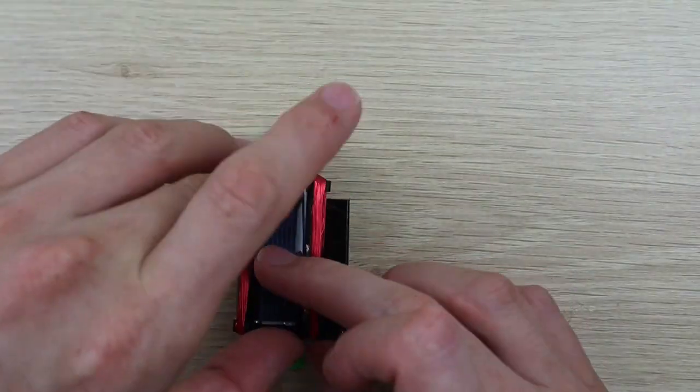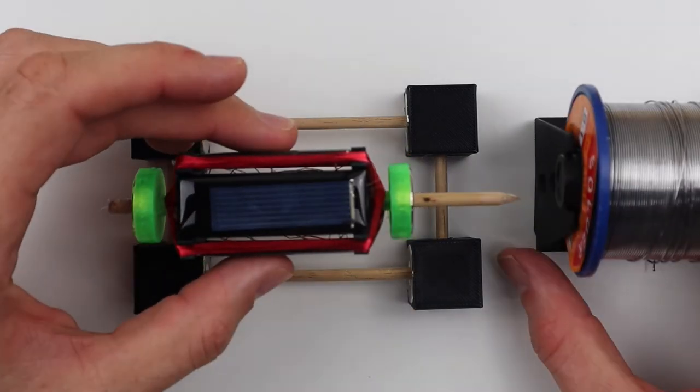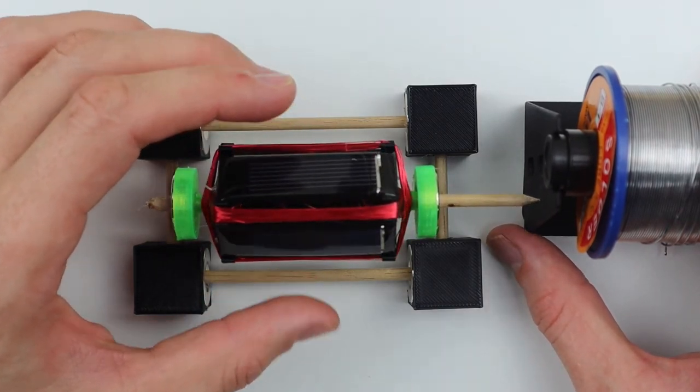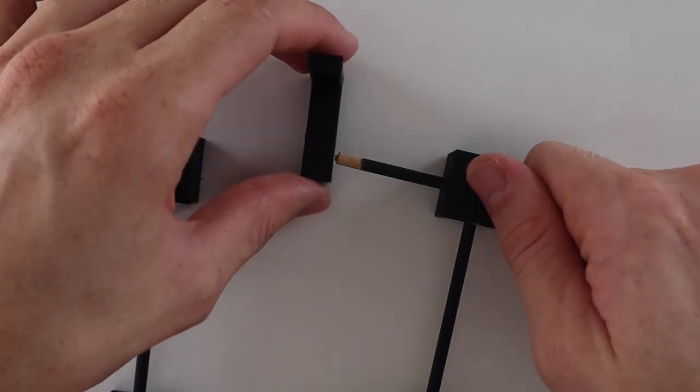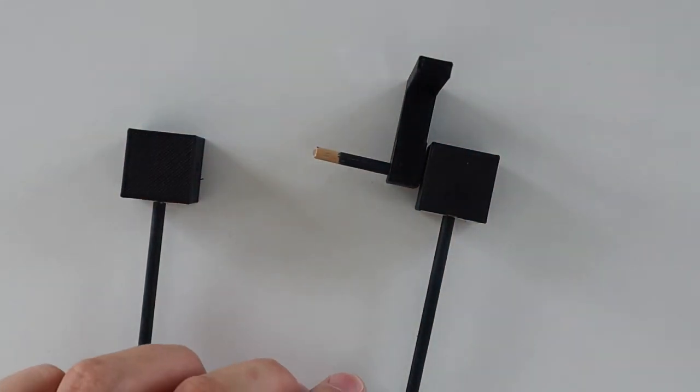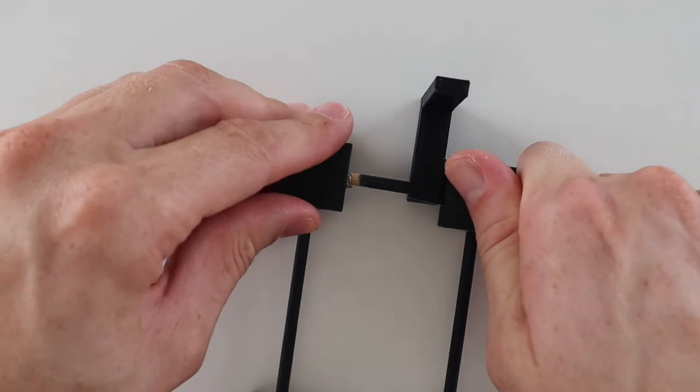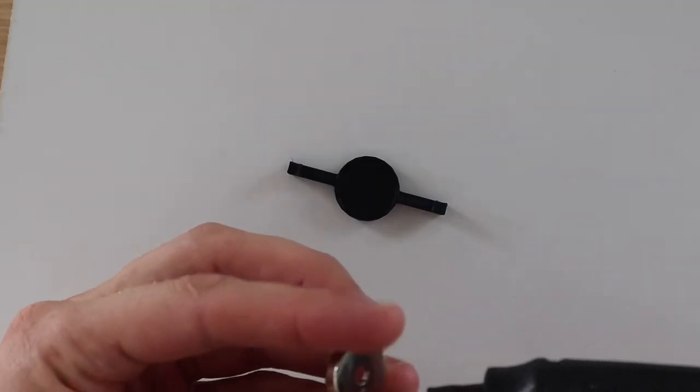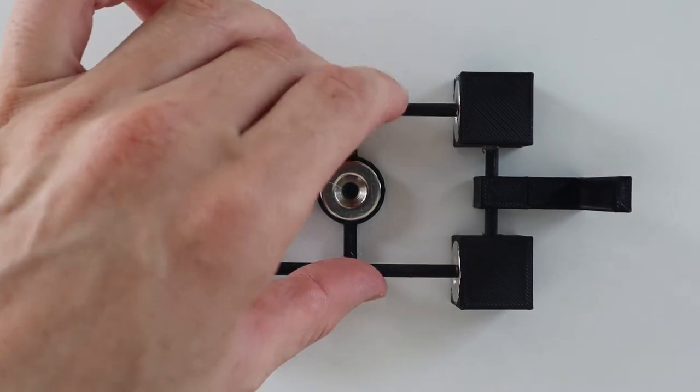Once you're happy with the solar panel connections, glue them into place. I then measured up the reaction point to make a 3D printed part to support the end of the rotor. I also added a magnet holder to the base so that the motor could be moved around freely. I sprayed the dowels black so that they match the 3D printed components.